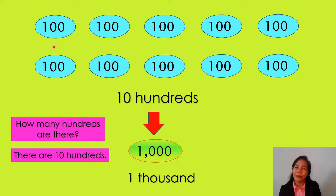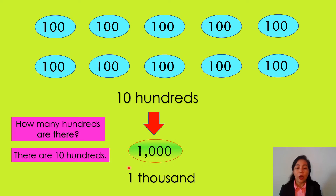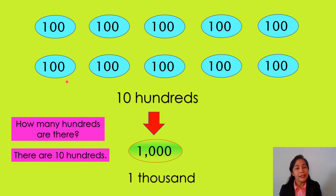One hundred. Look at this number. What number is it? You're right, it's one hundred. Let's count how many hundreds there are: one, two, three, four, five, six, seven, eight, nine, ten. There are ten hundreds. Ten hundreds is the same as one thousand. One hundred, two hundred, three hundred... one thousand.